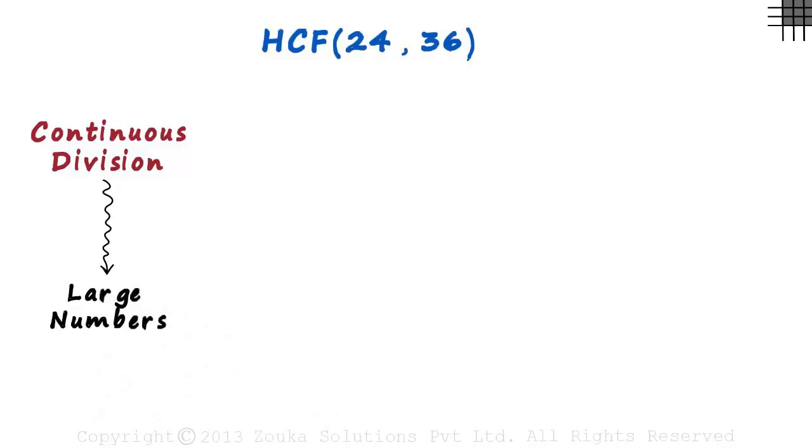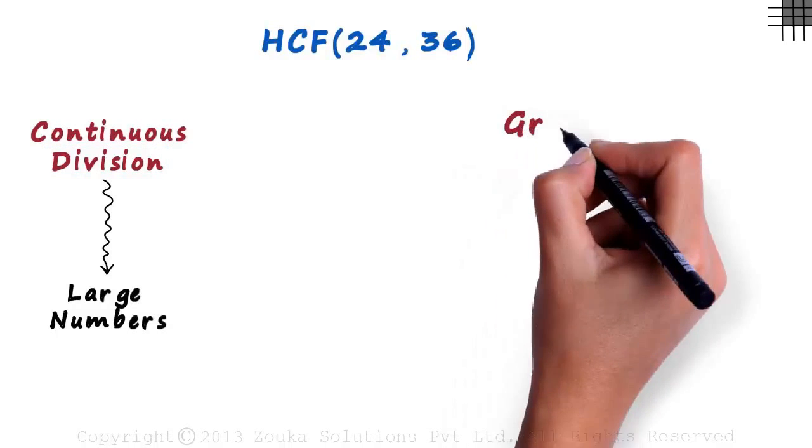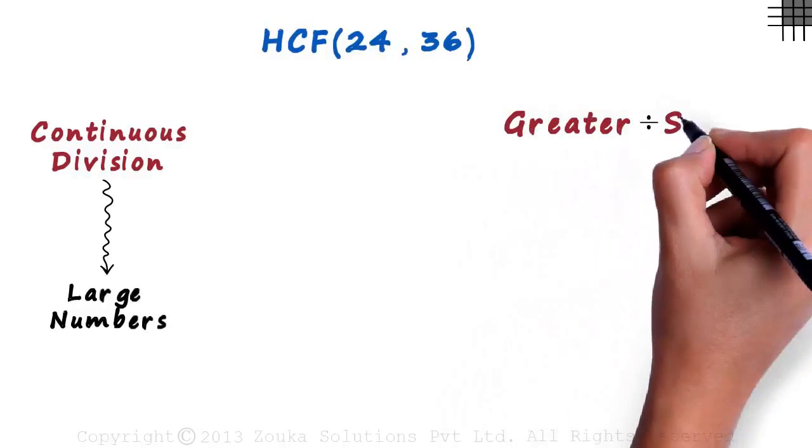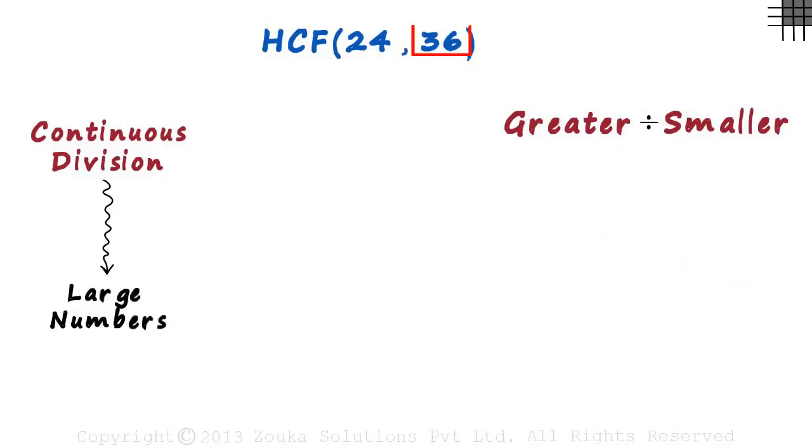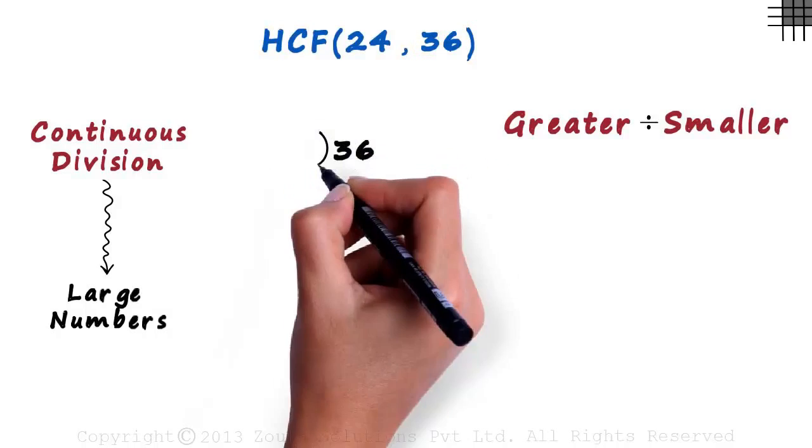This video is slightly lengthy and I would need you to focus really hard for the next few minutes. As the name says we have to use division. In the first step we divide the greater number by the smaller number. Here 36 is the greater number, so we divide 36 by 24.